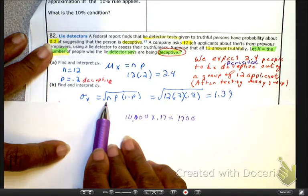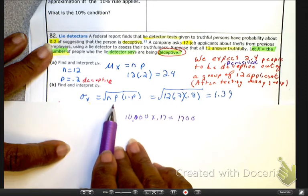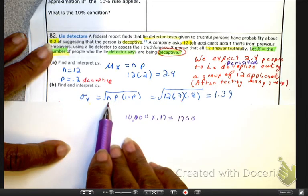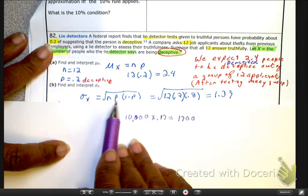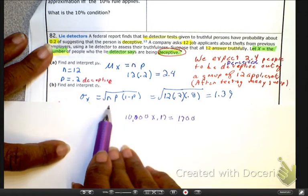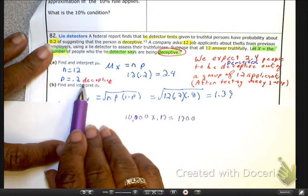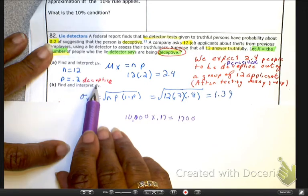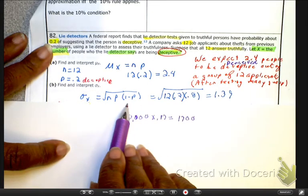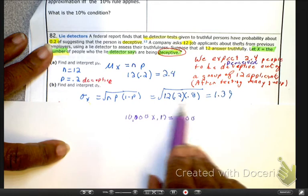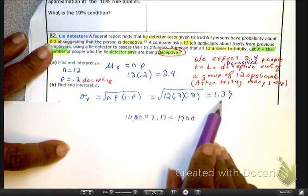And N represents your probability of success. I'm sorry, N represents the fixed number, which is 12 people. Okay, P represents your probability of success. In this case, success is being considered deceptive. And here's a probability of not being deceptive. So, take it, plug it in, chug it out.